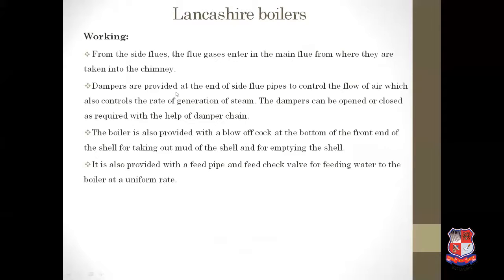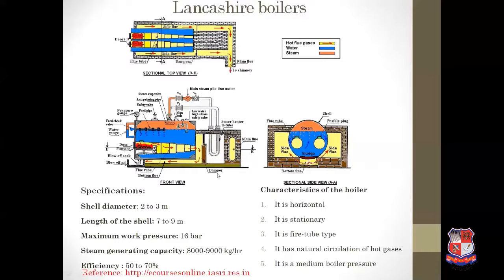Dampers are provided at the end of the side flue pipes to control the flow of air, which also controls the rate of generation of steam. The dampers can be opened or closed as required with the help of a damper chain. When steam generation needs to be controlled, we open or close the damper according to the requirement.